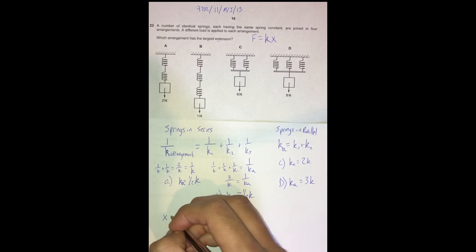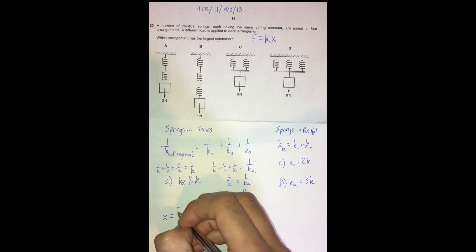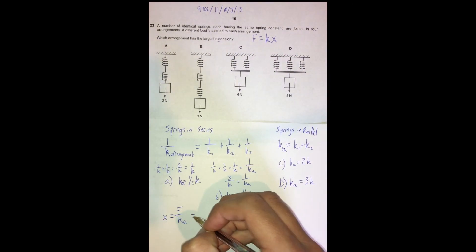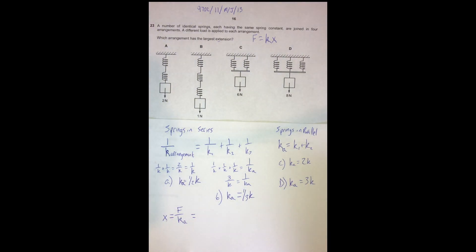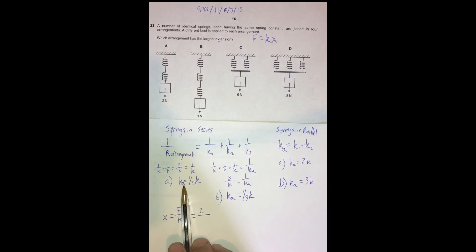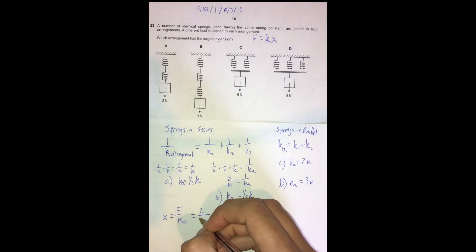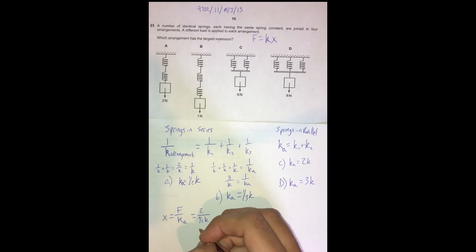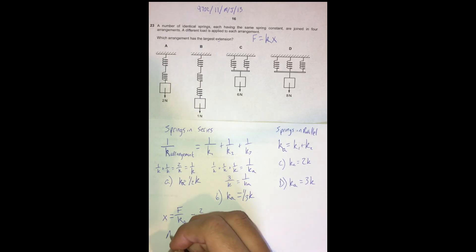The extension equals force divided by the arrangement spring constant — we've rearranged Hooke's Law to make extension the subject. For choice A: x = 2 / (k/2) = 4/k. That's the extension for choice A.